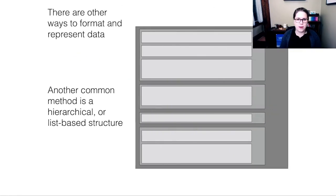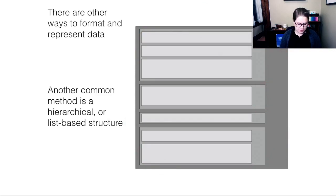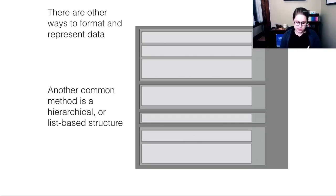There are other ways to format and represent data. If you're a computer scientist, you probably know about many of these structures. Another method would be a hierarchical or list-based structure — you could think about XML or JSON. These kinds of nests hold together similar pieces of information. We're not going to focus on that very much in this course, although if you want to work on that for your final project, I'm happy to help you move from a hierarchical data structure to something that's more tidy. The tools we're going to use in this course work best with tidy data.